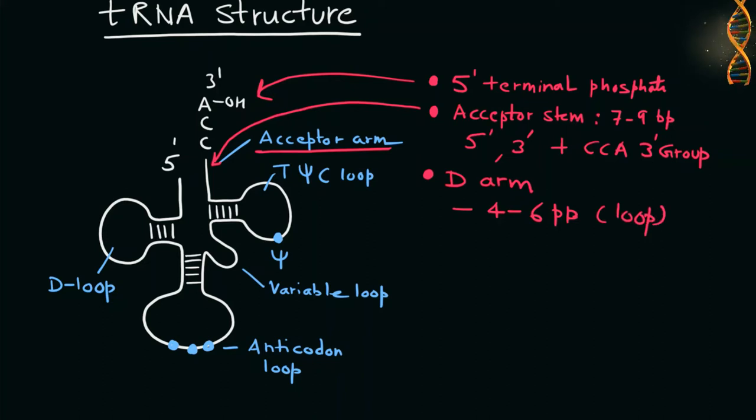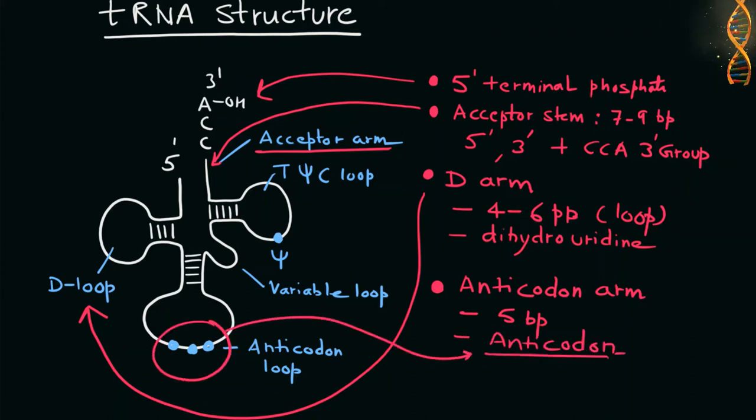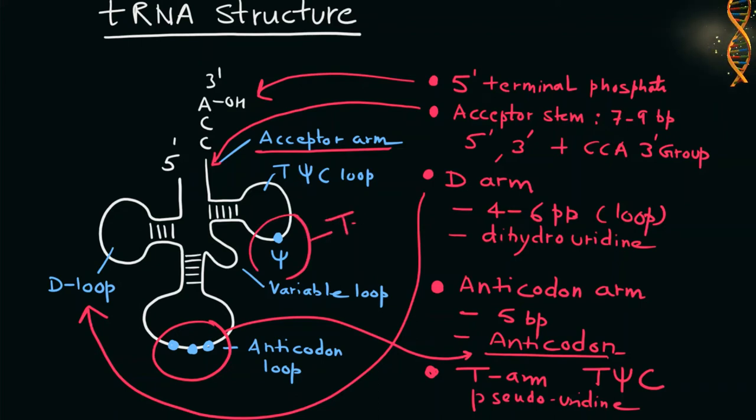It is a 4 to 6 base pair stem ending in a loop that often contains dihydro-uridine. The anticodon arm of tRNA is a 5 base pair stem and its loop contains the anticodon. And finally, the T-arm that is 4 to 5 base pair stem containing the sequence T psi C where psi is pseudouridine.